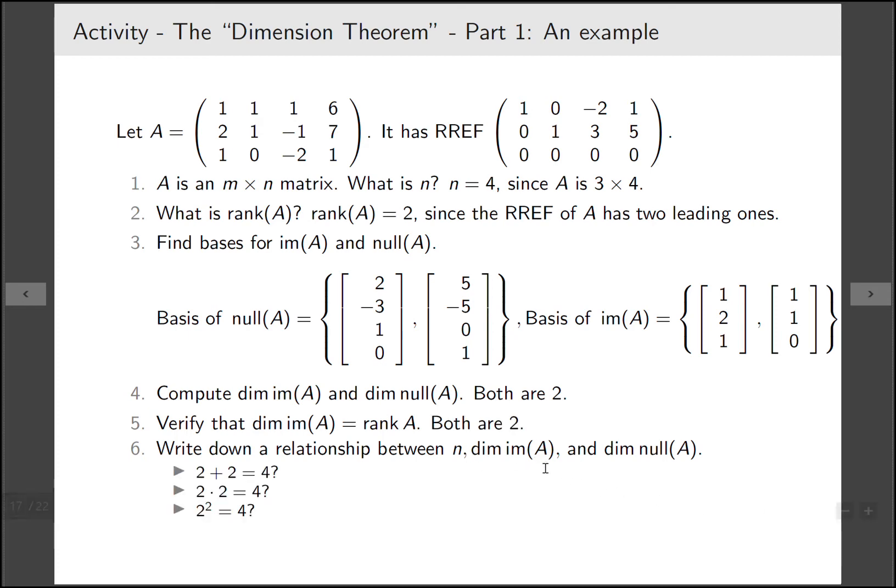Now if we were to write down a relationship between n, dimension of image of A, and dimension of the null space of A, well both of these are 2 and this is 4. So it could be any one of these three things. Which one of them is the most relevant for us? It's not exactly clear just from knowing that both of these things are 2 and this is 4. So in the next exercise we'll help to figure out which of these three things is the most relevant. Sometimes working with small examples is helpful but doesn't quite tell you all of the information you want. So working in full generality might help you.